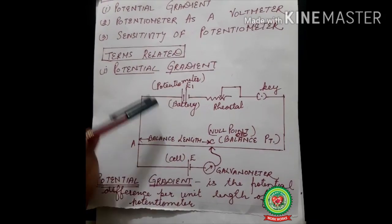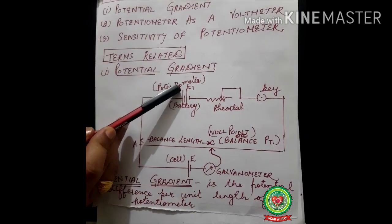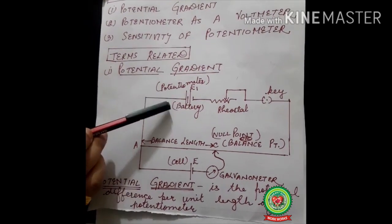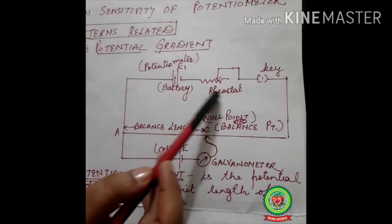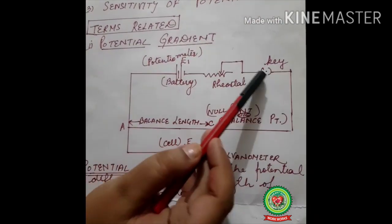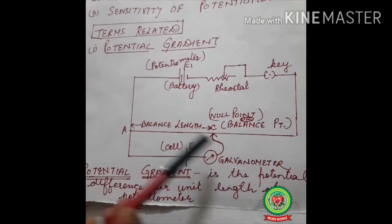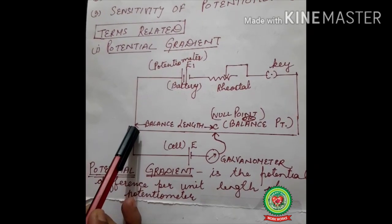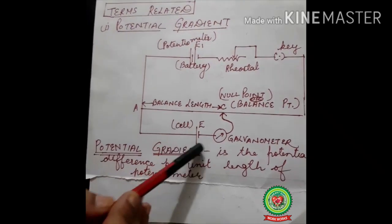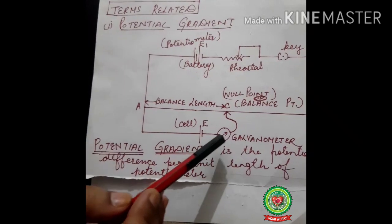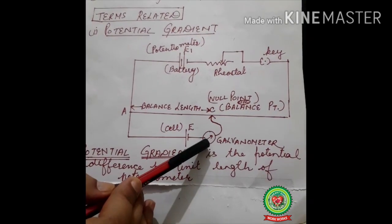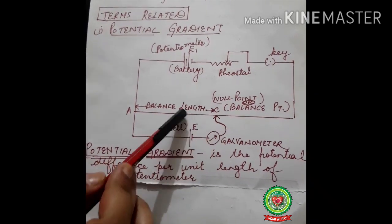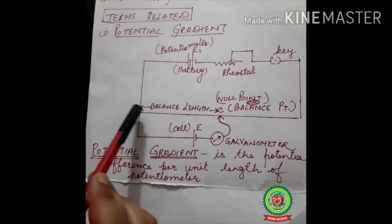This is a circuit of a potentiometer. Here we have a battery with EMF E1, then comes a rheostat, then the key — they are all connected in series — and then is the potentiometer wire made up of constantan. Then comes a small cell, and with this we have a galvanometer attached.